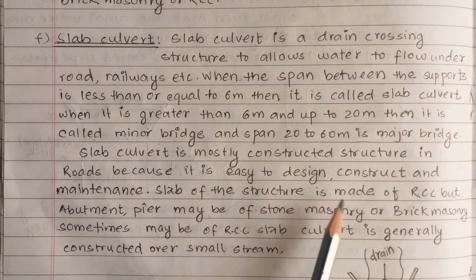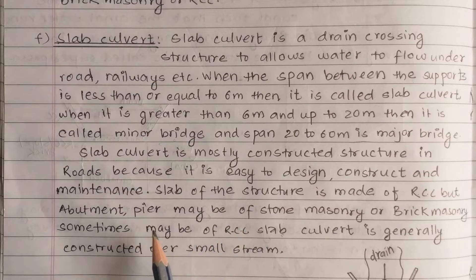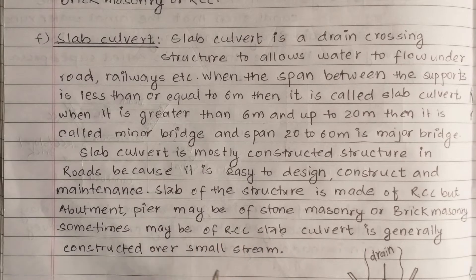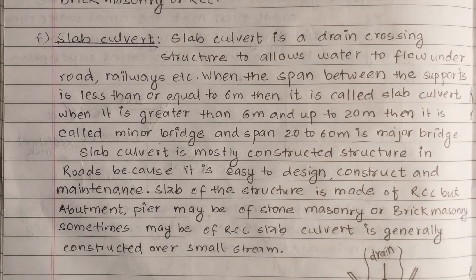The slab of the structure is made up of RCC, while the abutment, wing wall, and floor are made of brick masonry. Sometimes it may be of RCC slab. A culvert is generally constructed over a small stream.